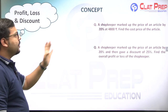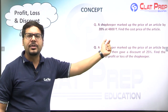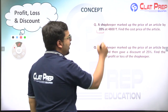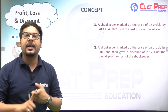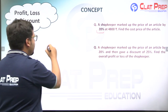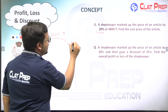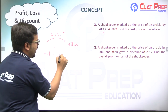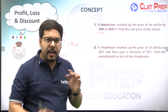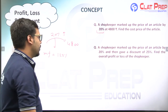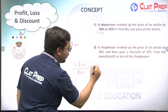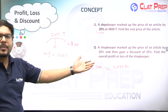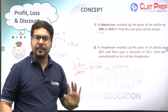Example 7: A shopkeeper marked up the price of an article by 20% at ₹4800. Here ₹4800 is the mark price (not cost price). Cost price was increased by 20%, giving mark price = ₹4800. Multiplying factor = 120% = 6/5. Cost price = 4800 ÷ (6/5) = 4800 × 5/6 = ₹4000.